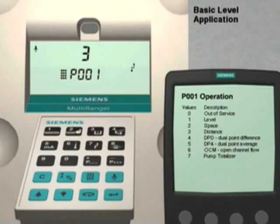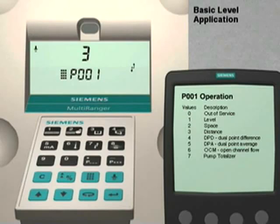Parameter 1 sets the type of measurement for the application. As you can see, it is currently set at 3, which is the factory default value. With this value, the multi-ranger would measure the distance from the transducer to the liquid surface.